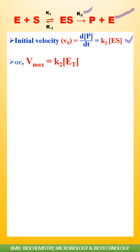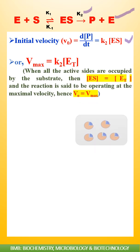We can write this equation as V_max = k2[E_T] because during enzyme saturation, all the active sites are occupied by the substrate, so [ES] equals [E_T] and v0 equals V_max.